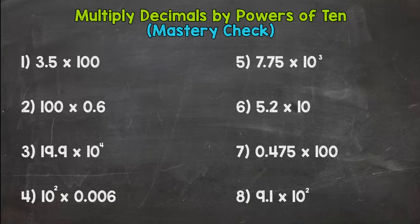Welcome back. I'm assuming you have those 8 problems answers, so we're going to go through the answers now. So number 1, we have 3.5 times 100, so 2 zeros, move the decimal twice, goes right here, and we get 350.